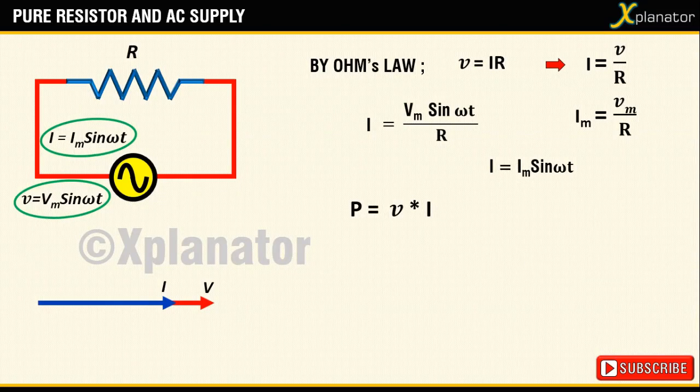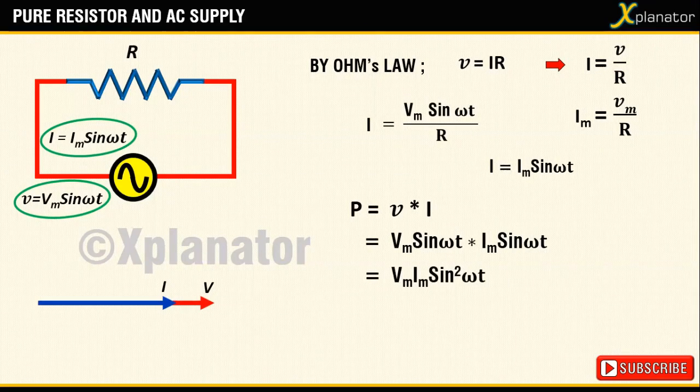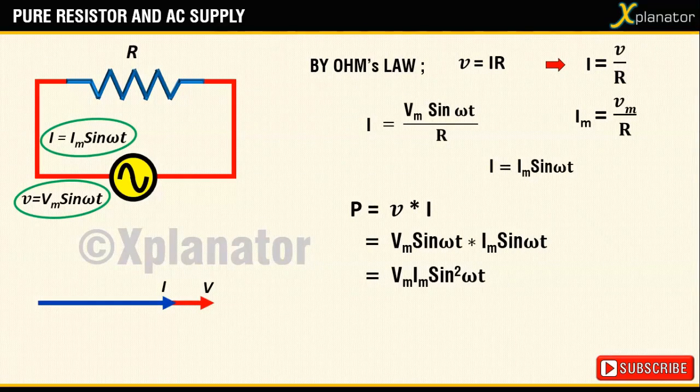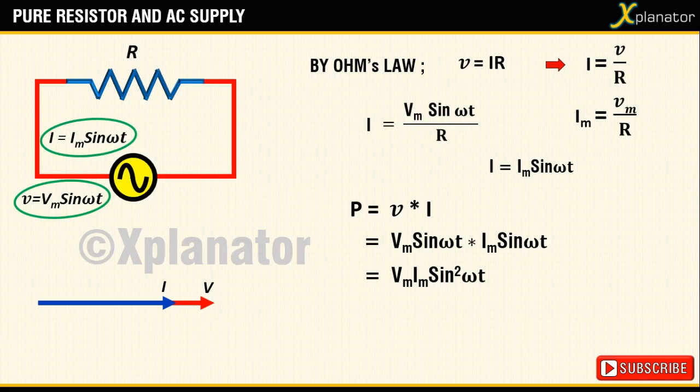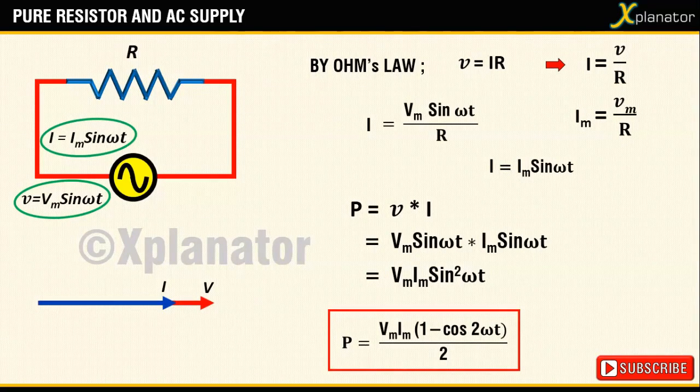Substituting the values we get p equals vm im sine square omega t, which when reduced further equates to p equals vm im into 1 minus cos of 2 omega t upon 2.